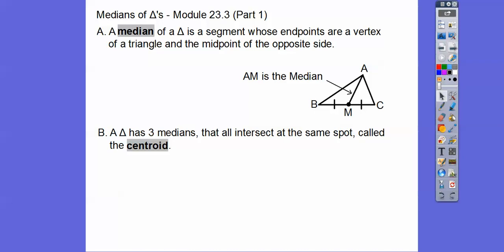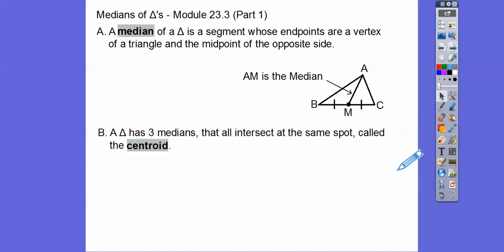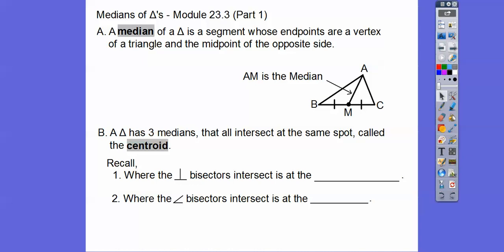A triangle has three different medians, because if we did another median from another vertex it would go to the midpoint of that side. The midpoint of AB would be right about there, and the midpoint of AC as well. What happens is they all intersect in the same spot, and that is called the centroid. Remember: where the perpendicular bisectors intersected gave us the circumcenter, where the angle bisectors intersected gave us the incenter. Now we have the centroid. In the next lesson, part two, we're going to get the orthocenter.